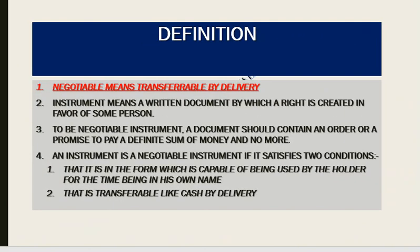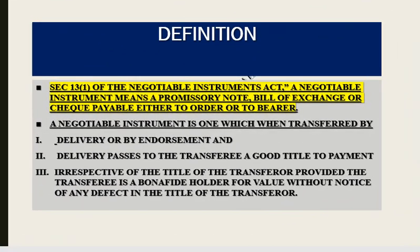Negotiable means transferable by delivery or by endorsement and delivery. Instrument means a written document by which a right is created in favor of some person. A negotiable instrument should contain an order or a promise to pay a definite sum of money and no more. An instrument is a negotiable instrument if it satisfies two conditions. Section 13, subsection 1 of the Negotiable Instrument Act states: negotiable instrument means a promissory note, bill of exchange, or cheque payable either to the order or to the bearer.